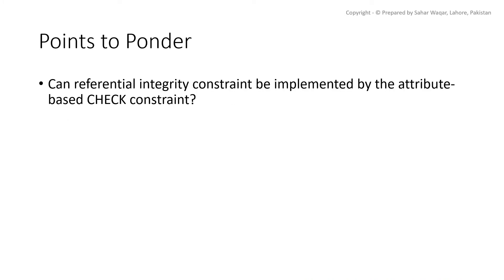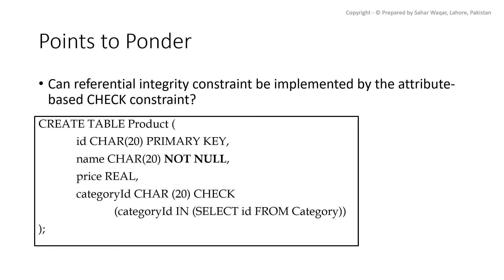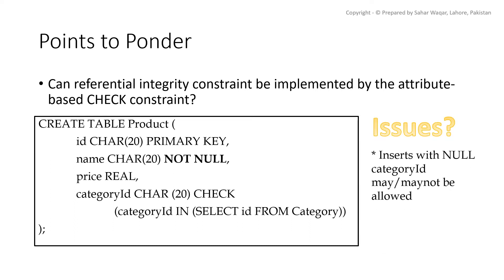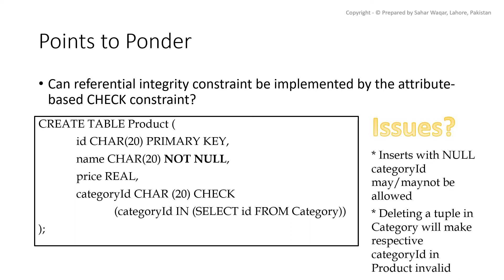We might think we can implement a foreign key constraint using an attribute-based CHECK constraint, since we are allowed to write subqueries inside CHECK. For foreign key implementation, all we need to do is make sure that whatever category_id we insert or update in the product table is present in the category table. So whenever a cid in the product table changes, we search for that cid in the category table — if it is present, the constraint is satisfied, otherwise it is violated. We have added a CHECK after category_id in the product table with a query stating that category_id of the product table must be IN the set of category ids from the category table. What possible issues can come with this attribute level constraint implementation?